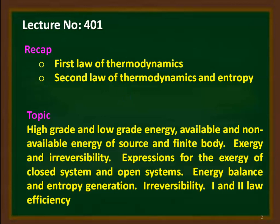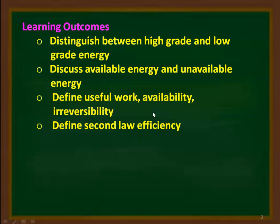The syllabus for this lecture covers: high-grade and low-grade energy, available and non-available energy of sources and finite bodies, exergy and irreversibility, expressions for exergy of closed and open systems, energy balance and entropy generation, and irreversibility. The learning outcomes: the student will be able to distinguish between high-grade and low-grade energy, discuss available and unavailable energy, define useful work, availability and irreversibility, and define the second law efficiency of the system.